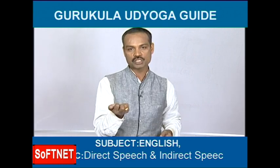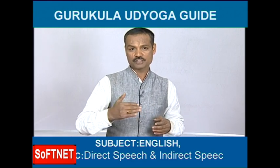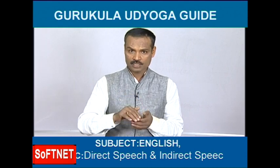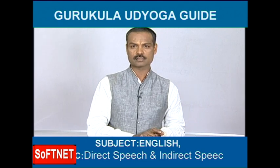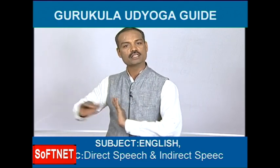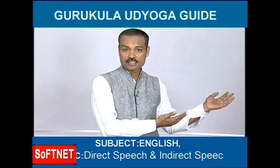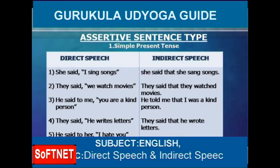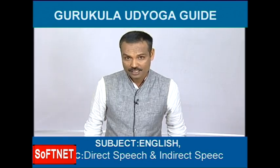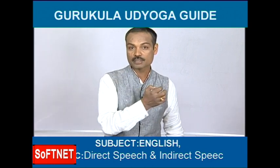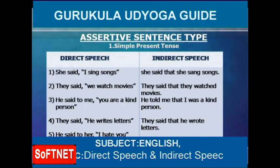Why does 'we' become 'they'? You need to visualize the situation. Here, 'they' refers to your neighbors who told you 'we watch movies.' When you pass that information to someone else, you would say 'they watch movies' — so 'we' becomes 'they'. And since simple present tense changes to simple past, 'watch' becomes 'watched'. Answer: 'They said that they watched movies.'